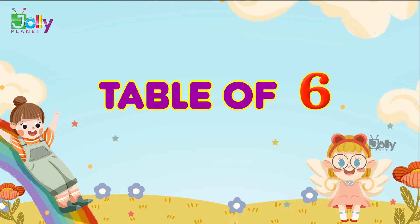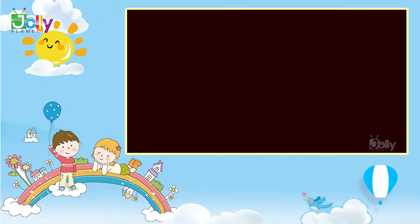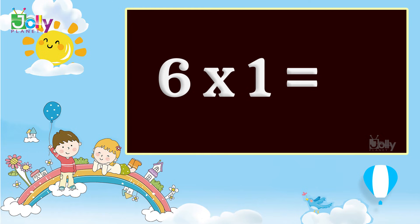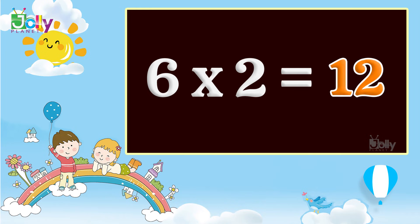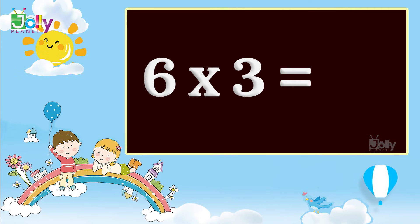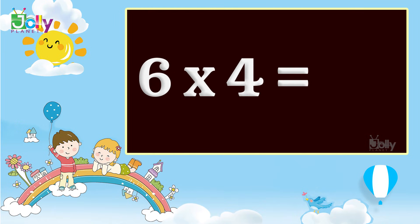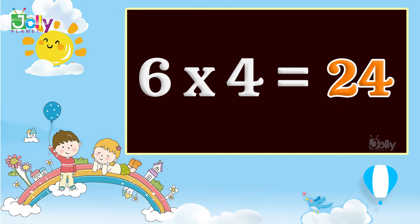Table of six. Six one's are six. Six two's are twelve. Six three's are eighteen. Six four's are twenty-four. Six five's are thirty.